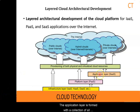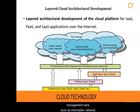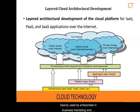The application layer is formed with a collection of all needed software modules for Software as a Service applications. Service applications in this layer include daily office management work such as information retrieval, document processing, and calendar and authentication services. The application layer is also heavily used by enterprises in business, marketing and sales, consumer license management, financial transaction, and supply chain management.